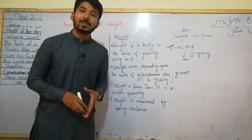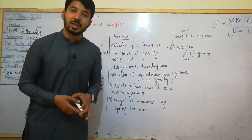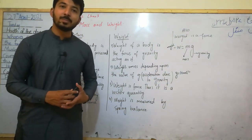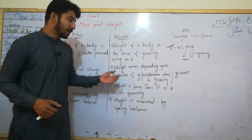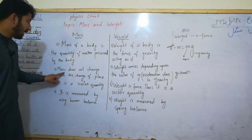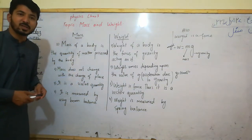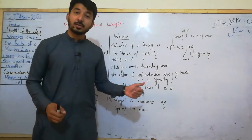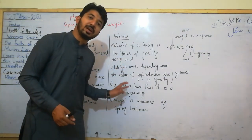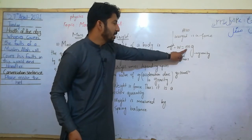When you talk about gravity, you have gravitational acceleration. We call it g and its value is 10 meters per second squared. So weight depends on the value of g. Mass does not depend on any quantity depending on the value of g, but weight depends on the value of g. When you change your place, the value of g changes.